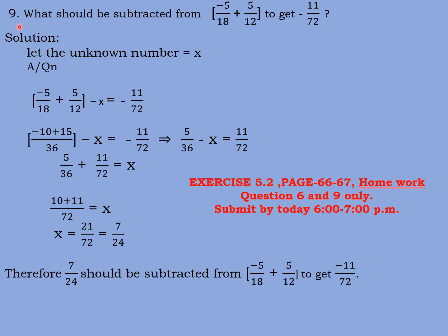Question number 9 is the same kind of question. What should be subtracted from minus 5 by 18 plus 5 by 12 to get minus 11 by 72? Here again let us assume the unknown number to be x. Then according to the question, minus 5 by 18 plus 5 by 12 in the big bracket minus x is equal to minus 11 by 72.